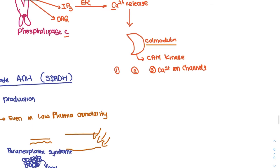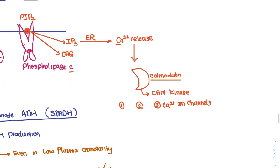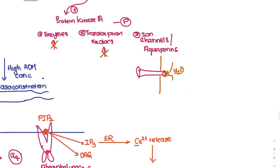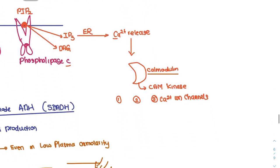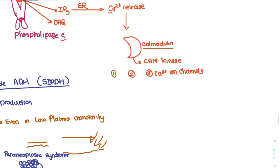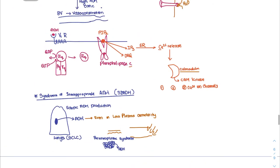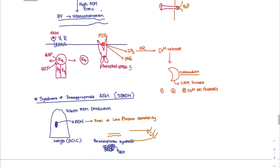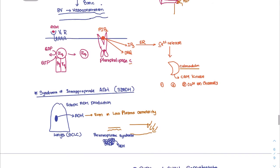Calmodulin activates CAM kinases, which cause increases in enzyme activity, transcription factors, or ion channels. In this case, calcium ion channels increase on the membrane, causing an influx of calcium, which leads to depolarization of the cell and vasoconstriction. This occurs during high plasma osmolarity.